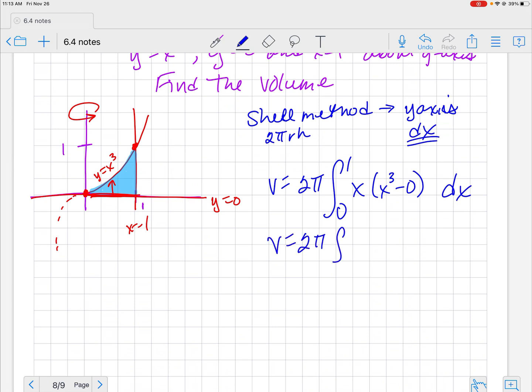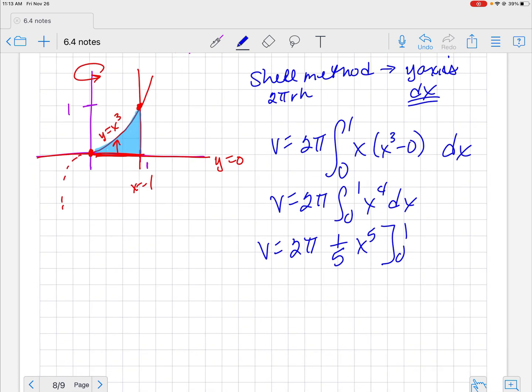So I've got 2π and I'm going to go from 0 to 1 here of x to the 4th because when you multiply like bases, you add those exponents. So I've got 2π and I've got that 1/5 x to the 5th from 0 to 1. So volume is equal to 2π times 1/5. So my volume is 2π over 5.